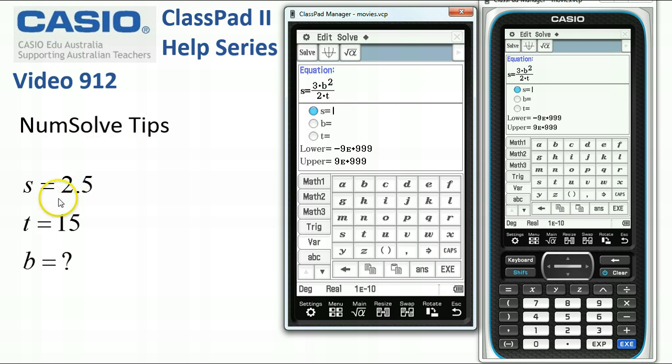Now, in this case, let's say we're trying to find b when s is 2.5, so 2.5, and t is 15. So we set the variable against b, and NumSolve only ever finds one solution at a time, so really we're better off using the solve application in main sometimes. But often this is an easier way to work with a formula, so we've selected b as our unknown.